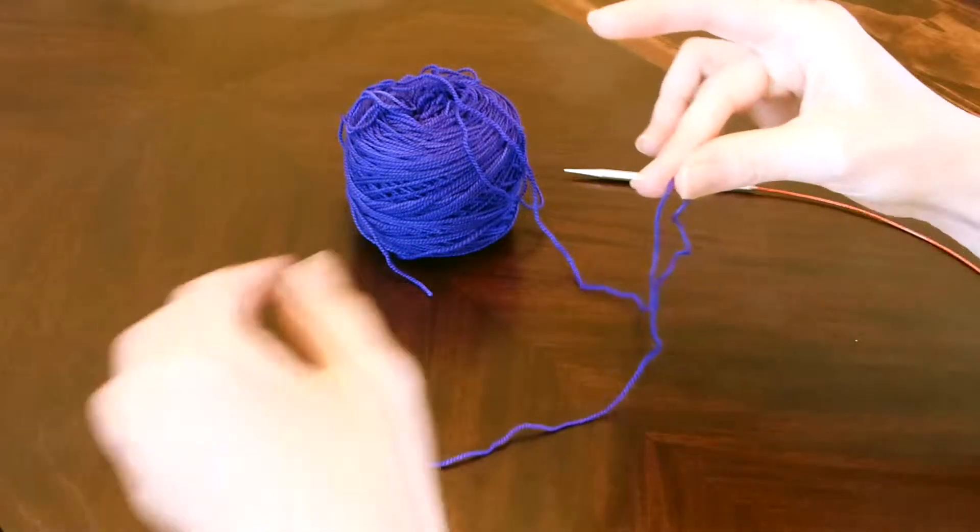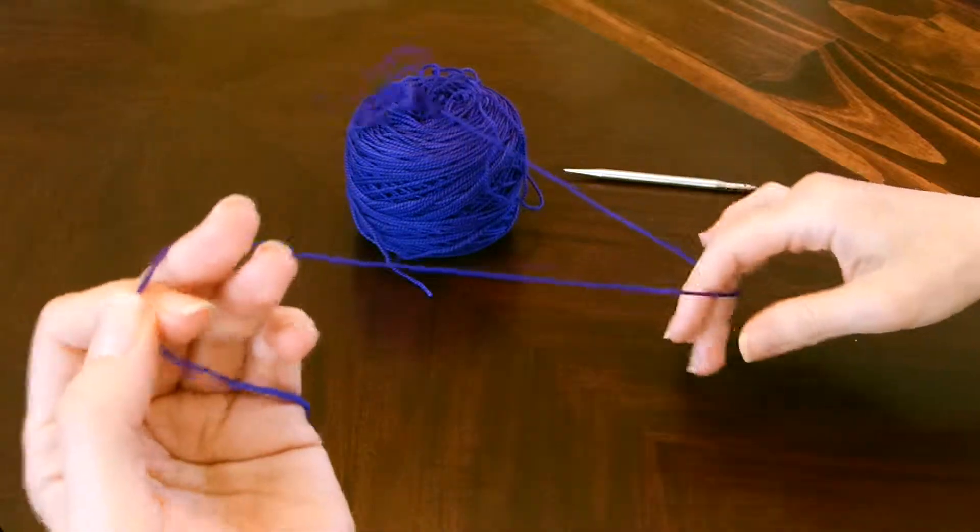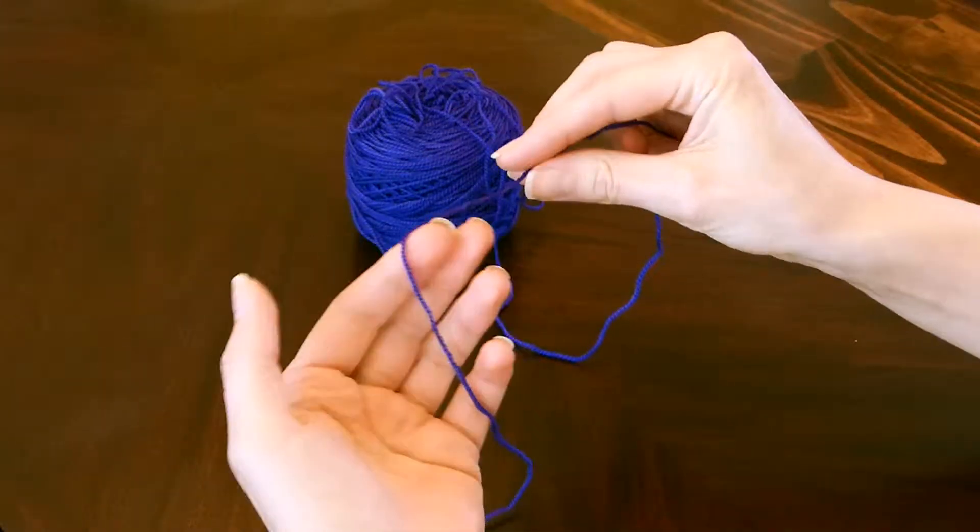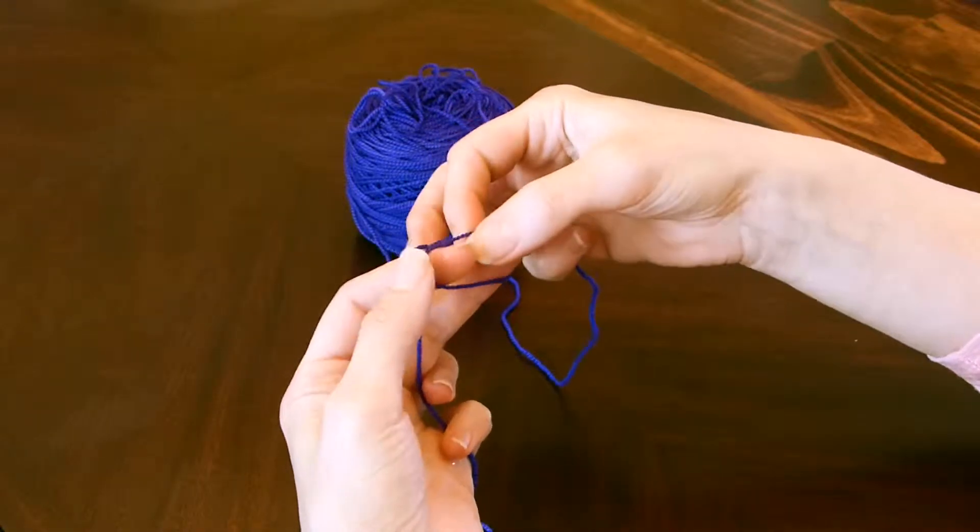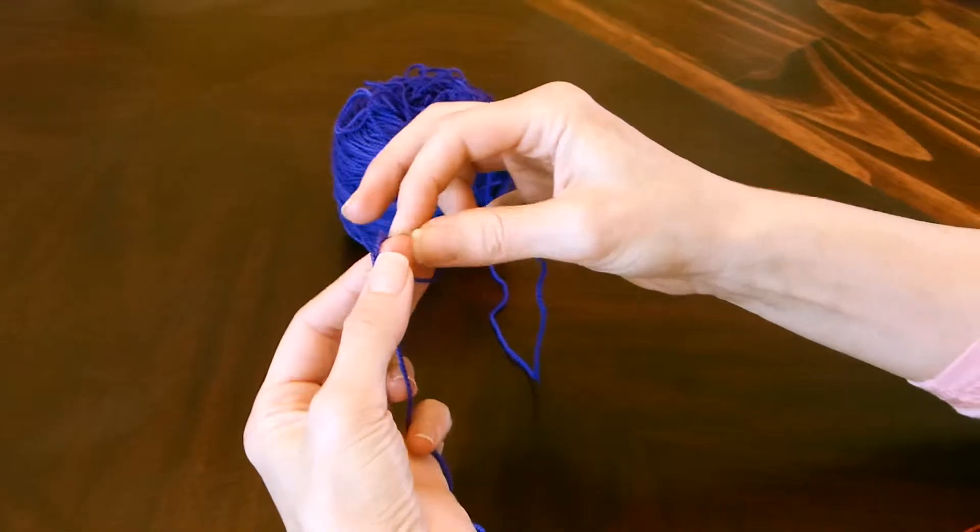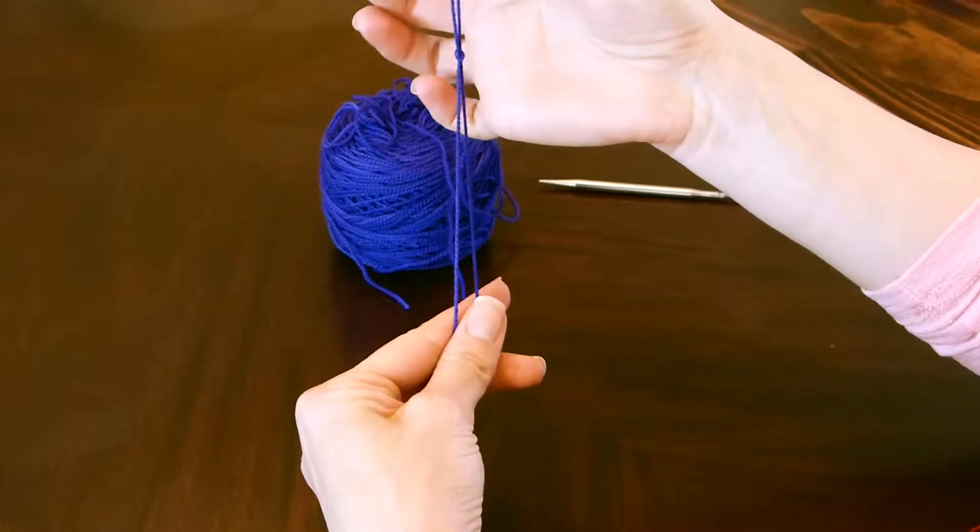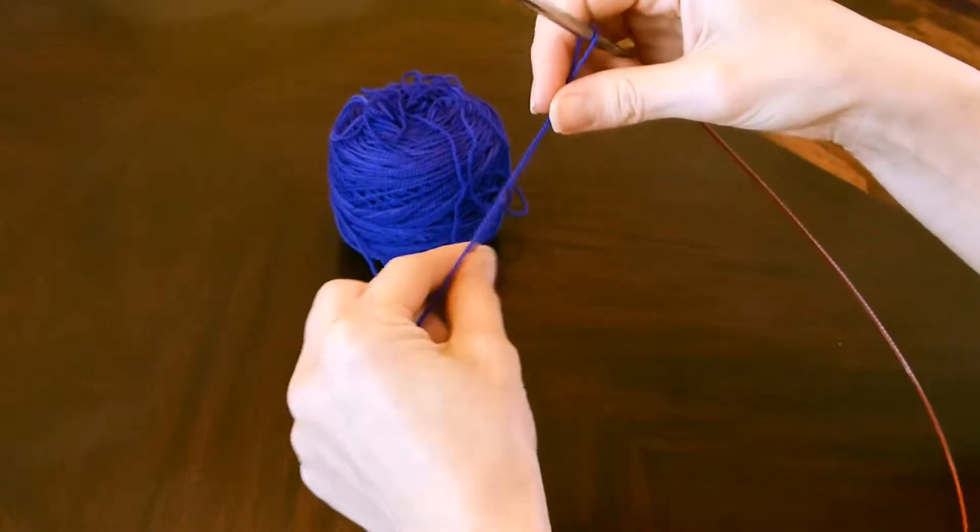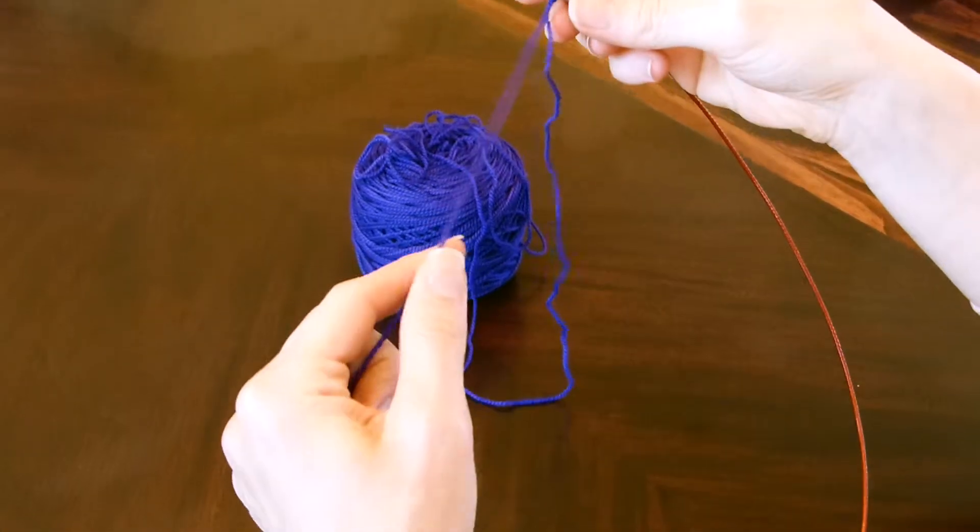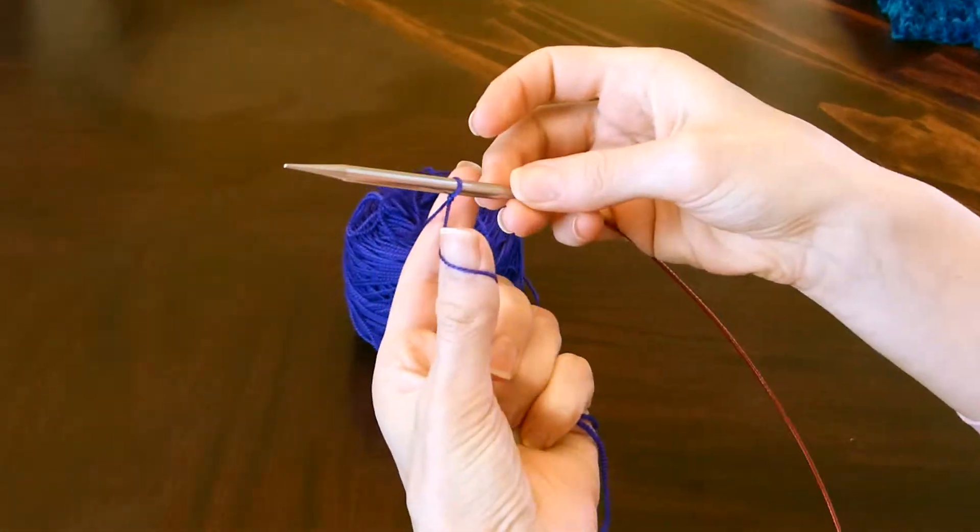The first stitch is always the slip knot. To make it, just wrap the yarn around your two fingers and pull it through. Now take the needle, wrap it around the needle, and tighten it up. That's the first stitch.